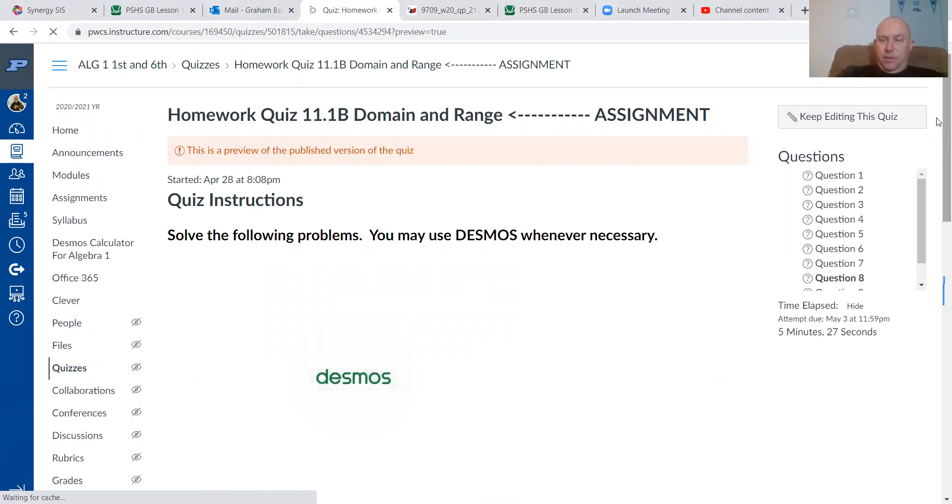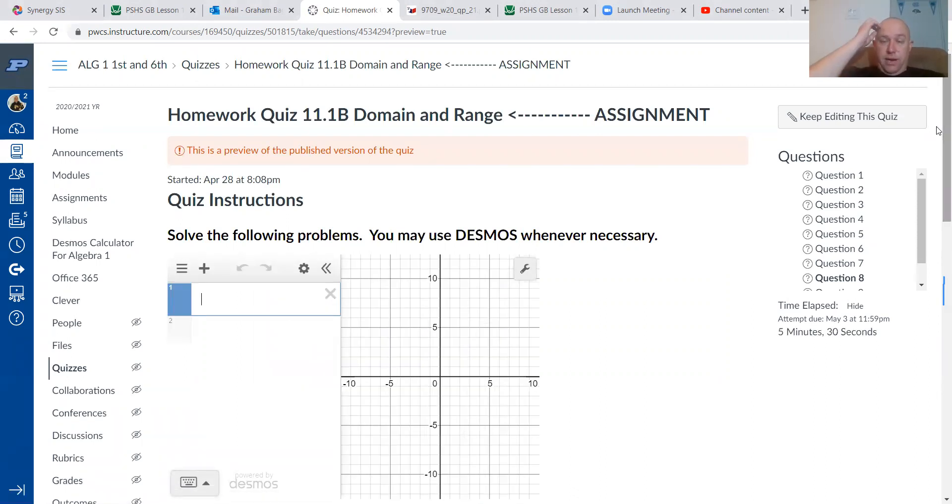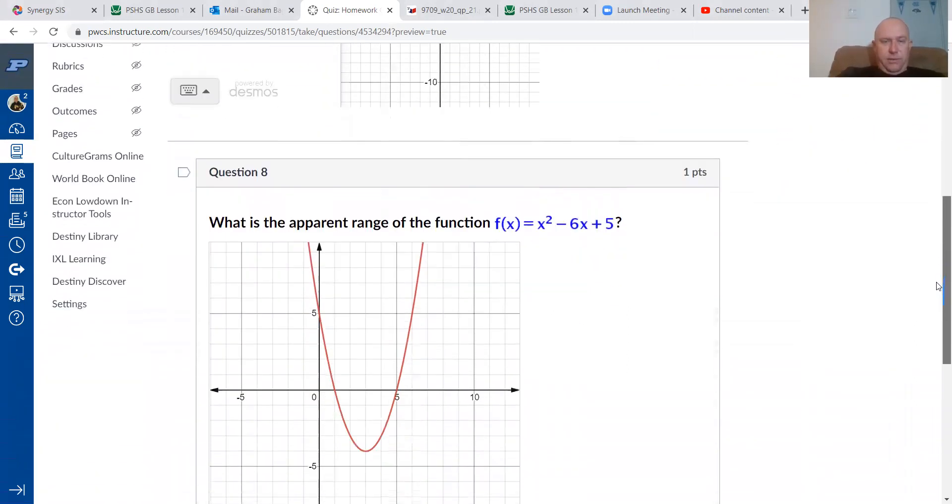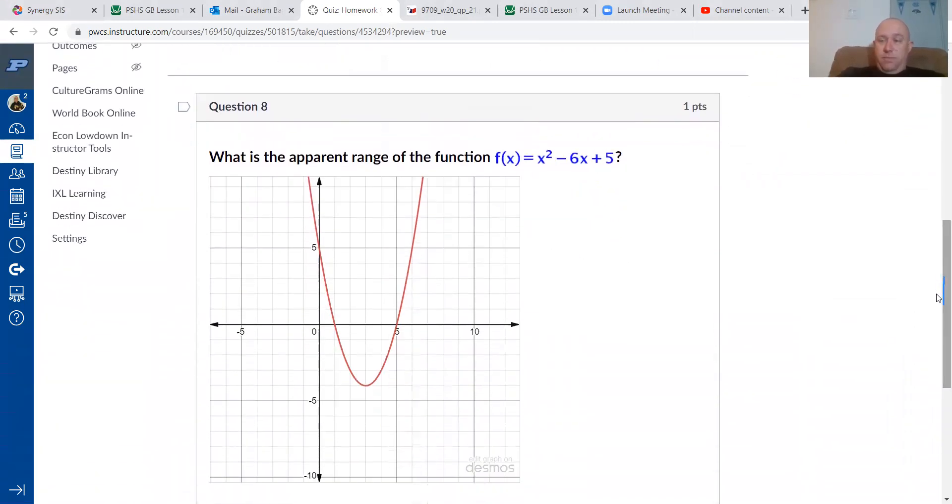That specific type of graph you'll see in Algebra 2, the V-shaped graph, is called an absolute value graph. I know we've done absolute value this year. Range, same thing. Once again, we're looking for the highest and the lowest. Doesn't appear to be a highest value because this continues. Certainly go and find that lowest value, that vertex. Take a reading to the y axis, and you should be able to answer that one.